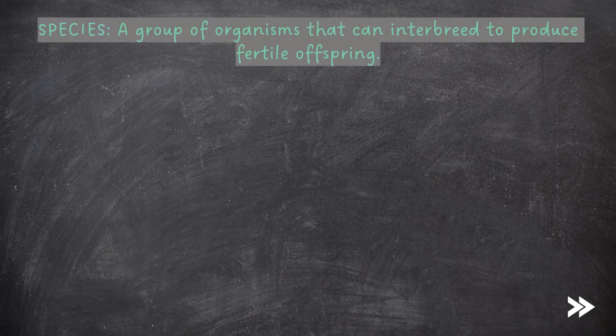Let's start off by defining what a species is. A species is a group of organisms that can interbreed to produce fertile offspring. This is your standard exam answer, and it's usually just an easy one-mark question: define what a species is.